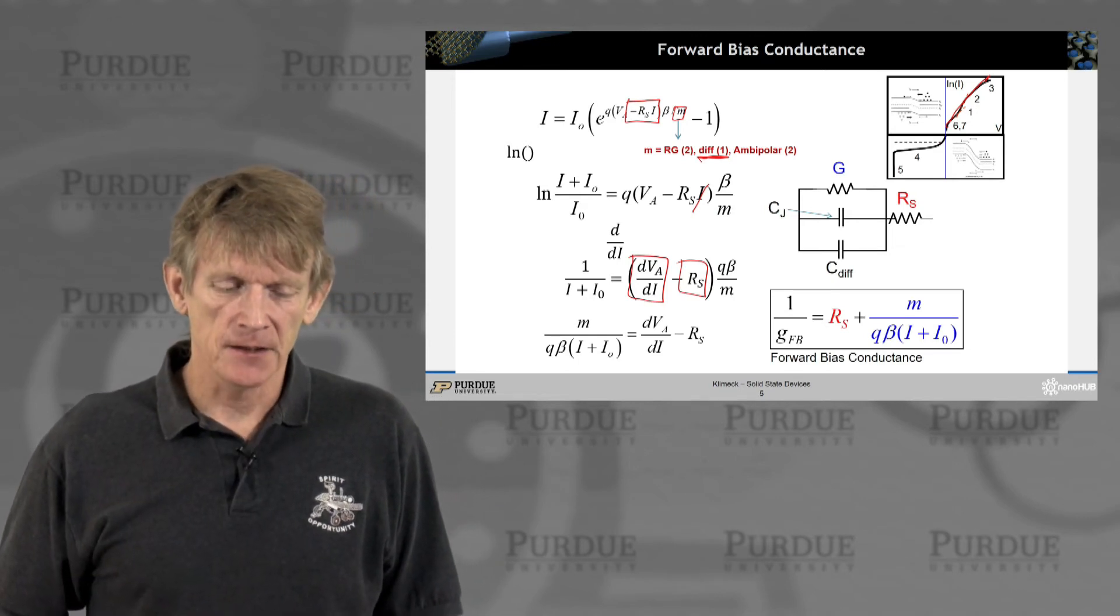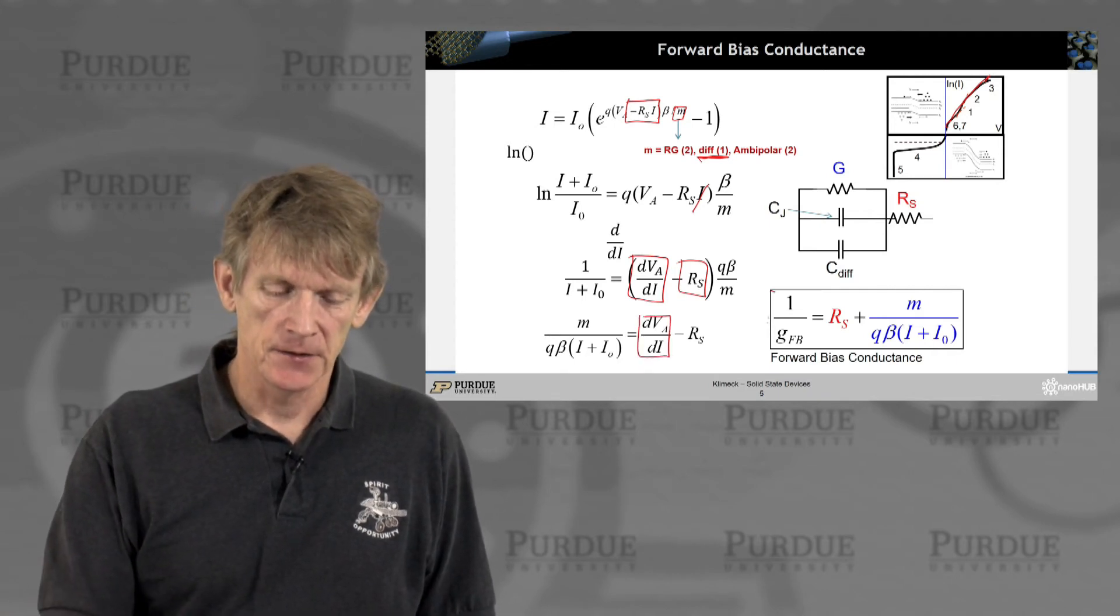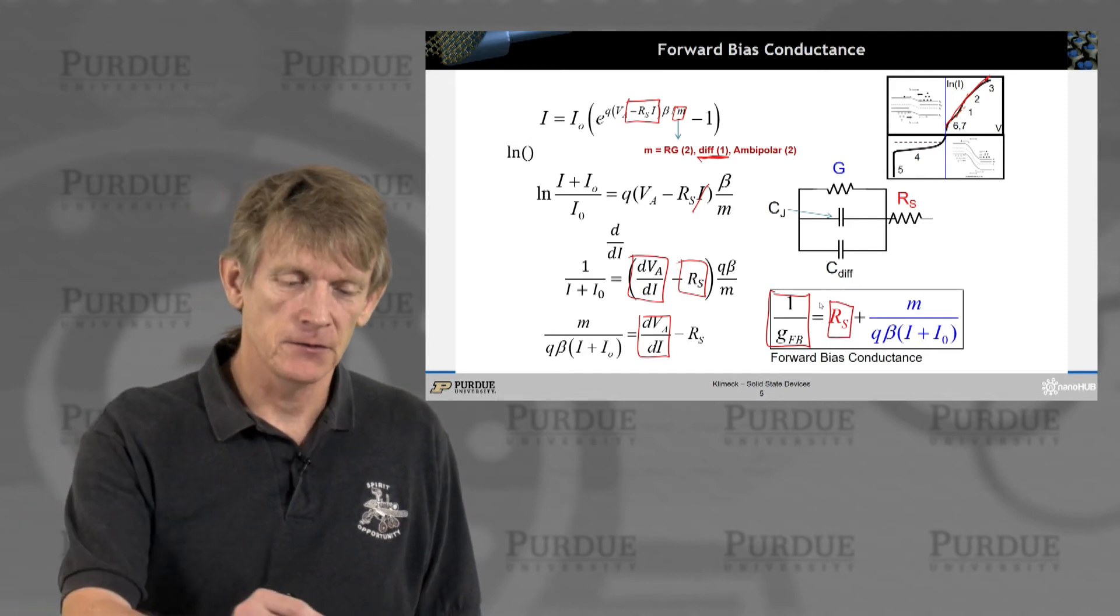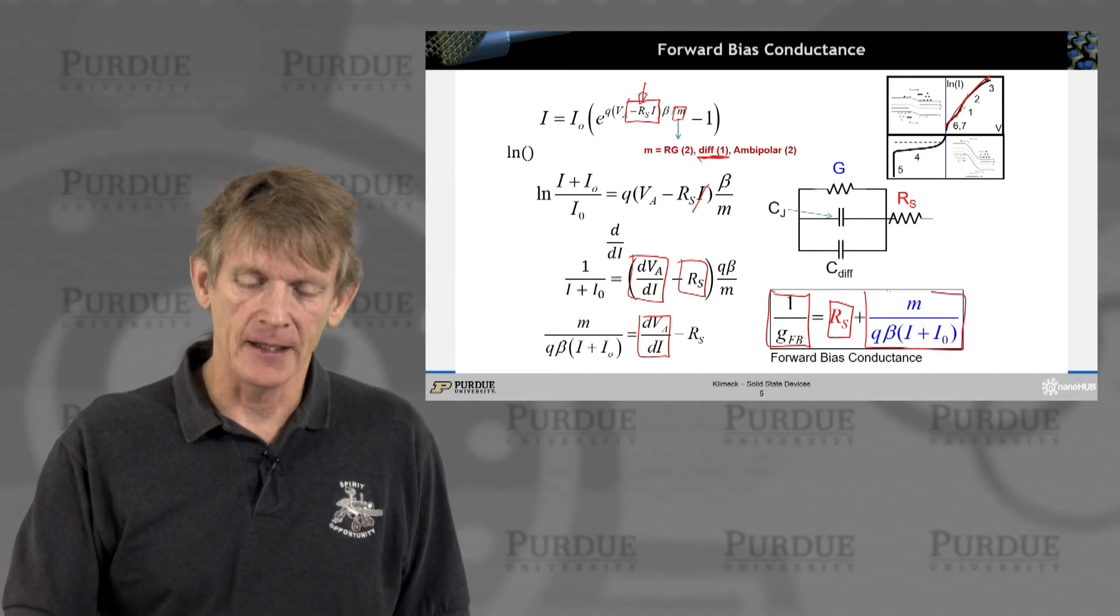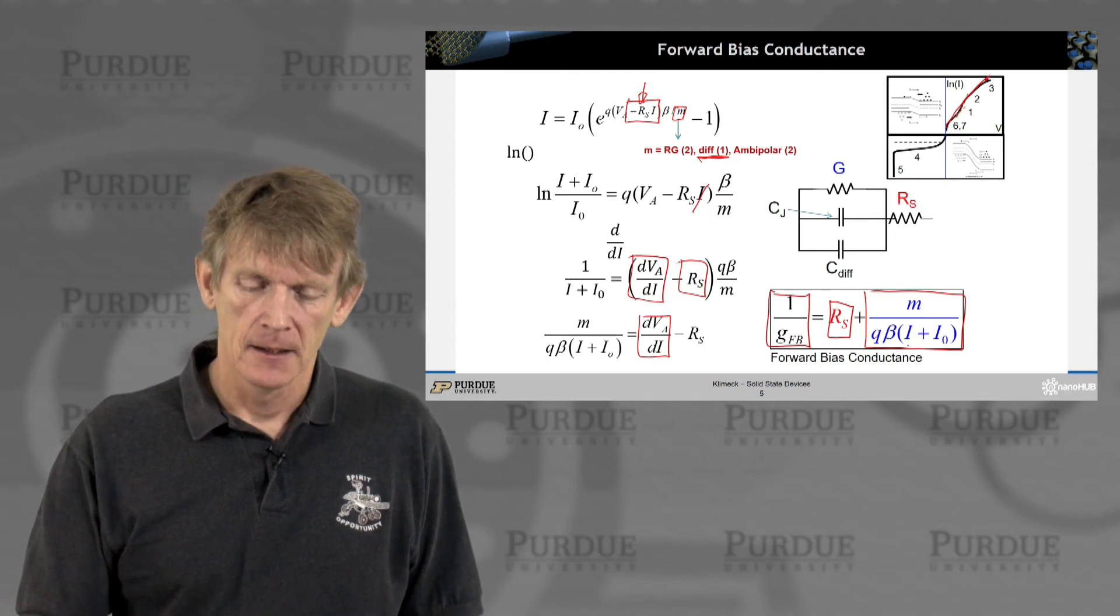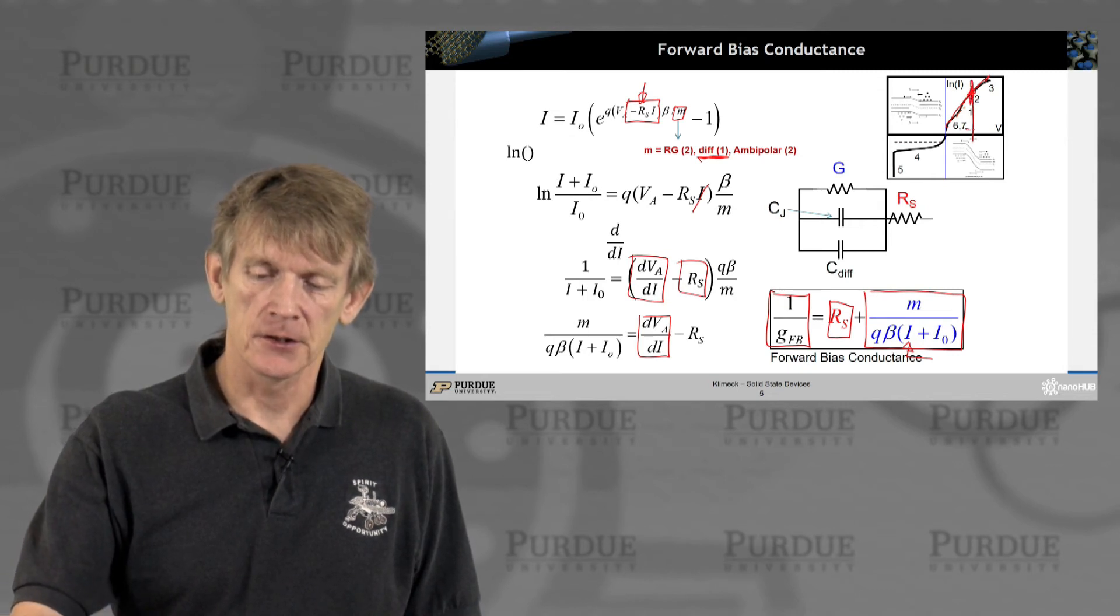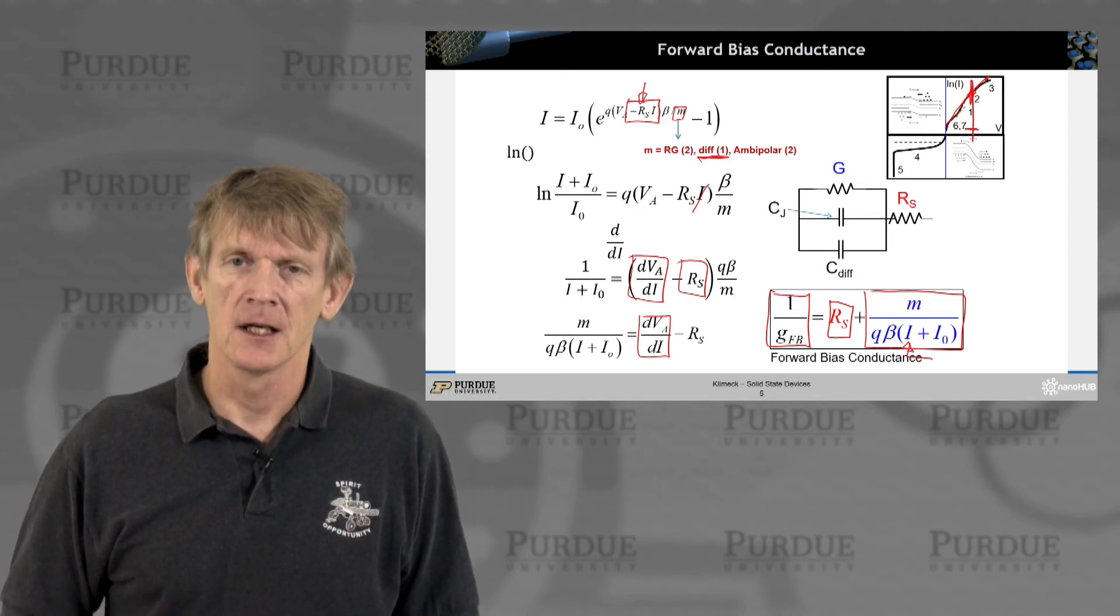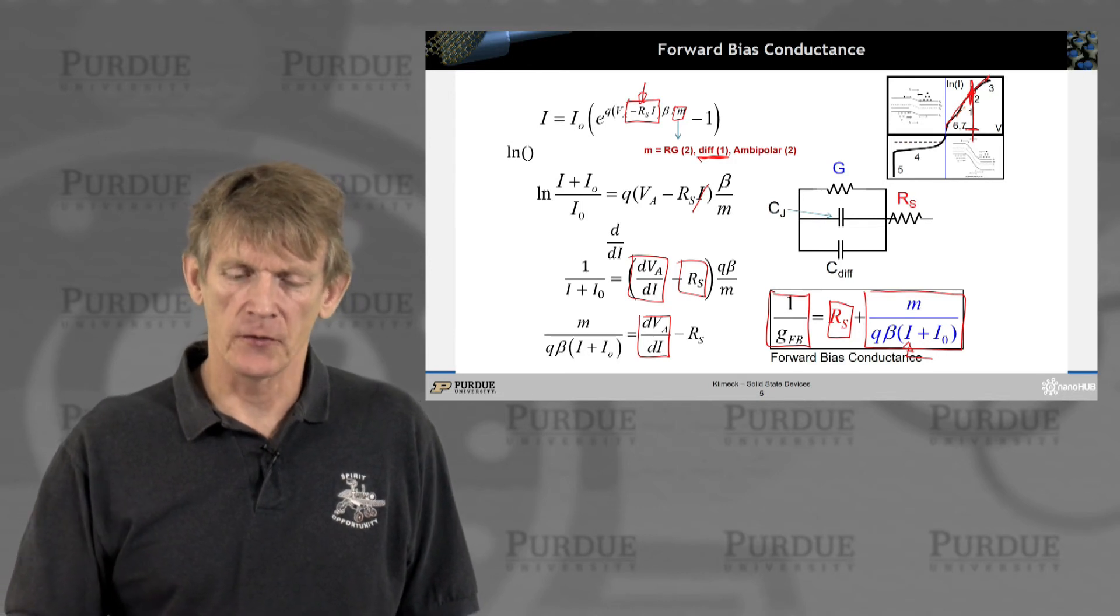If you do that, you see that you have the conductance term here. It's the so-called forward bias conductance. You have the series resistance that is in there, which stems from up here. And you have an element now that depends on I. This is now effectively bias dependent. This I here depends on where you bias the device, and then you wiggle the voltage and current around a bias.